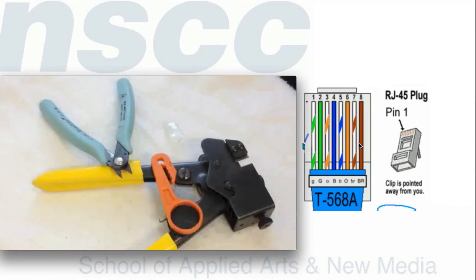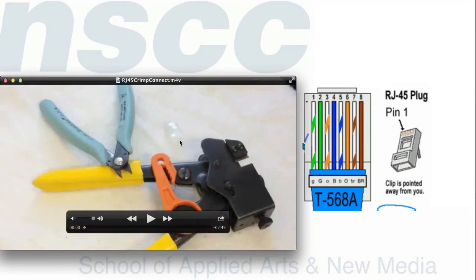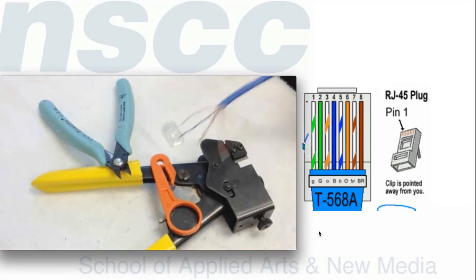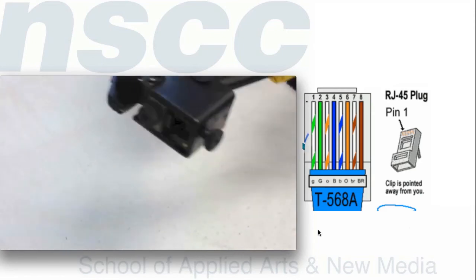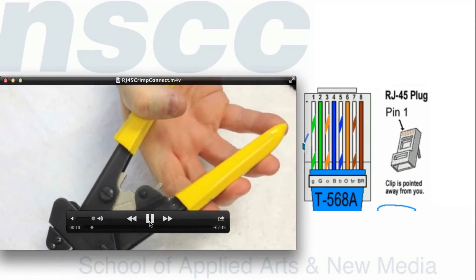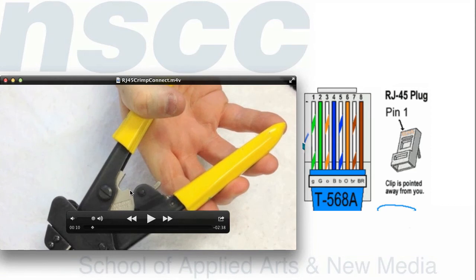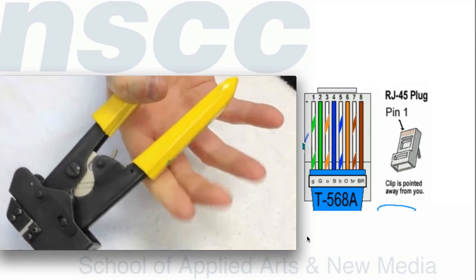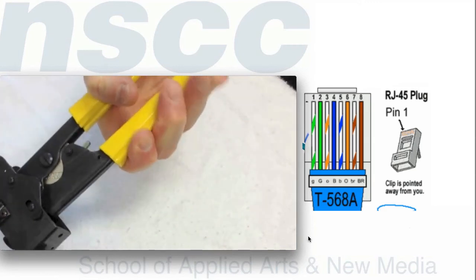Now we're going to look at how to make a patch cable and crimp an RJ45 end on. The tools you'll need are the RJ45 connectors, a pair of cutters, a wire stripper, and a crimp tool. You should have a ratcheting crimp tool — you'll see there's a little ratchet mechanism. One problem with non-ratcheting crimp tools is that it's easy to pull halfway and not make a proper crimp. A ratcheting tool will not release until you've pulled it in the full standard amount, ensuring a proper crimp every time.